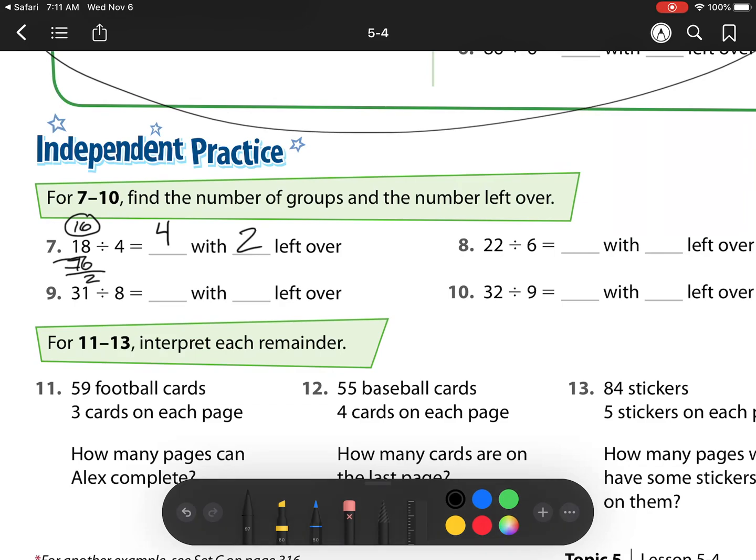For number 8, we have 22 divided by 6. Well, I know that 18 again is really close, and I can get 18 by 6 times 3. So I can make 3 groups, and then when I do that, I need to figure out how many I have left over. So I'm taking those 18 away, and I am left with 4.